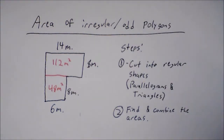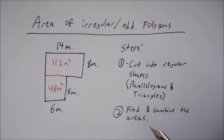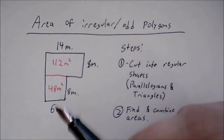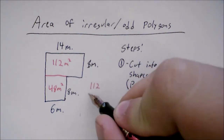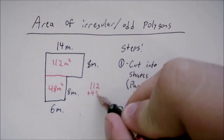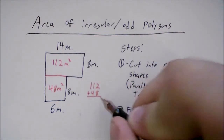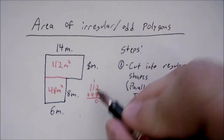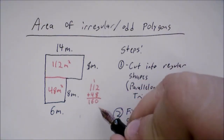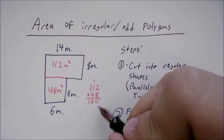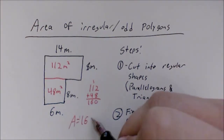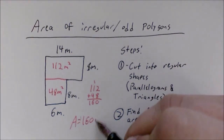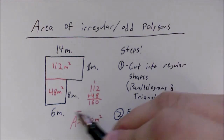Step 2 is simply to combine and find the areas. We found the areas. When we combine them, we take 112 plus 48, which gives us an area of 160 meters squared. And that's our area.